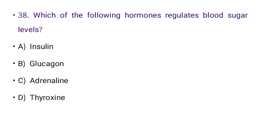Next: Which of the following hormones regulates blood sugar levels? Options: insulin, glucagon, adrenaline, or thyroxine. The right answer is A: insulin.